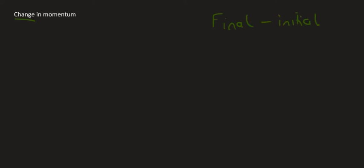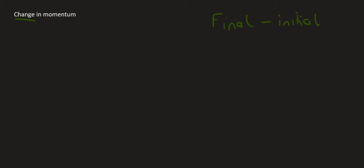Let's say we have the following scenario. We initially had a 3 kilogram car traveling at 2 meters per second towards the right. It then hits a wall and bounces off the wall to the left at 1 meter per second. Obviously the mass will still be the same. What we want to know is the change in the momentum.